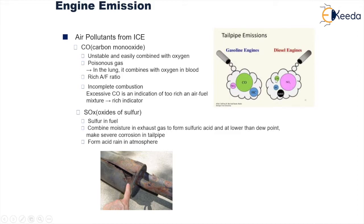Now let us see how they are formed and what is their nature. The first one is carbon monoxide. It is very unstable and it easily combines with oxygen, thereby it is considered to be a poisonous gas which will eventually result in the reduction in oxygen carrying capacity of the blood in human beings. This is formed because of incomplete combustion in a fuel, and the primary cause of this can be a rich air-fuel mixture.